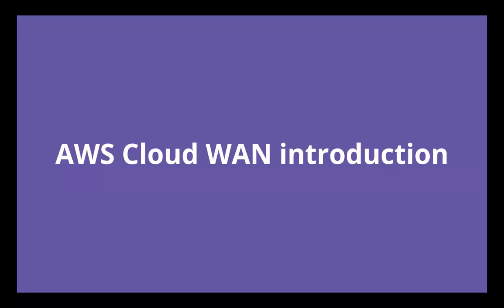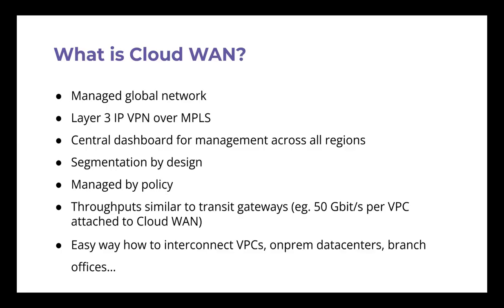So let's start with the introduction. What is Cloud WAN? Basically, the description is easy: it's a managed global network. For the on-prem guys, it's a Layer 3 IP VPN over MPLS. If you know that, you can go home — you'll learn nothing new. But if you don't, you can stay of course.